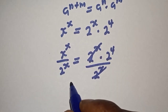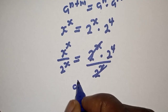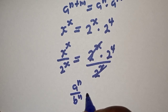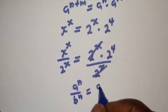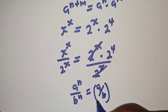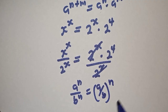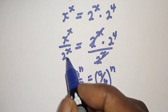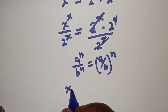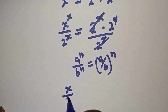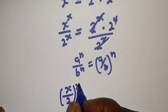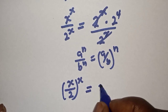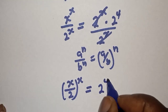Then take note of this rule: if you have a raised to the power n over b raised to the power n, this is equal to a over b raised to the power n. So, this can be written as s over 2 raised to the power s is equal to 2 raised to the power 4.